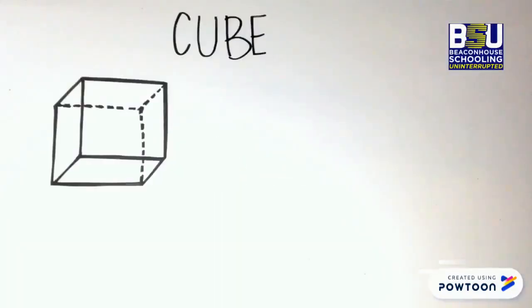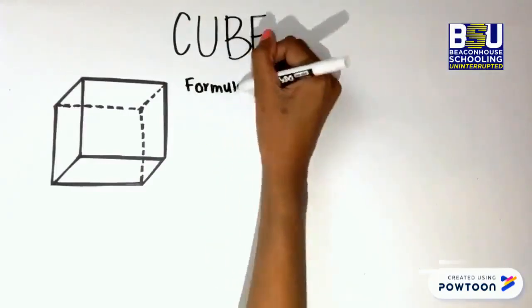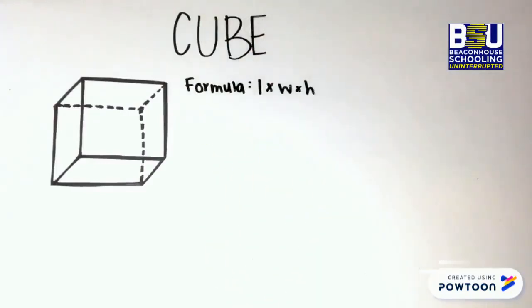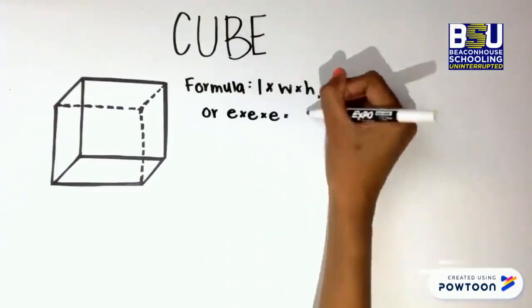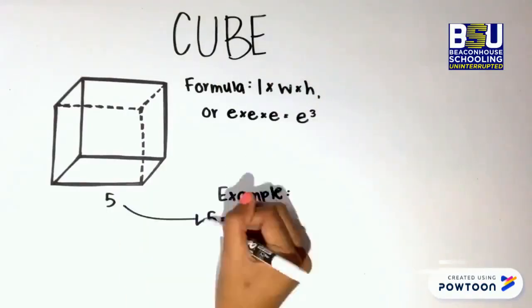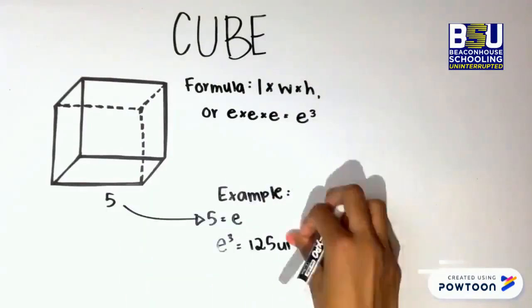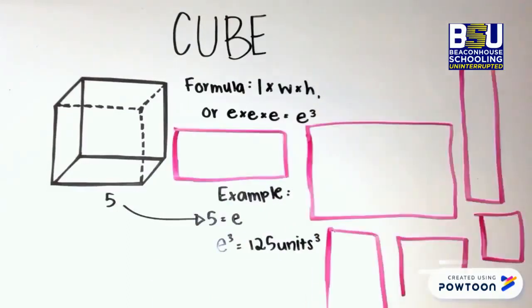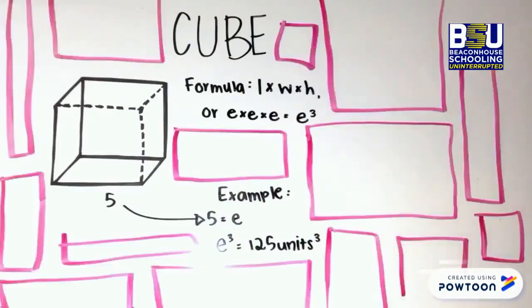The volume of anything with straight sides is the area of the base times height. That's why the formula for a cube is length times width times height, or edge times edge times edge, which is edge cubed. Notice the little 3 at the top — that shows that the shape is 3-dimensional.